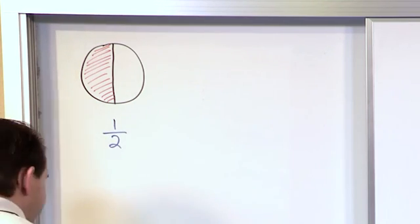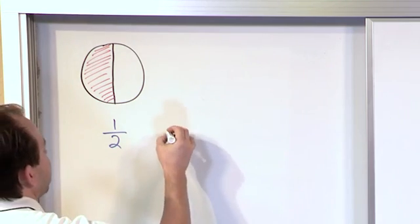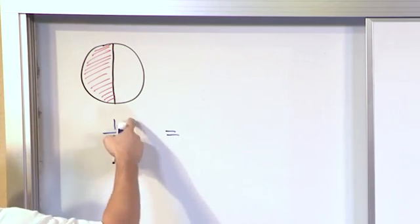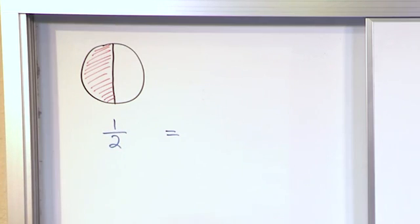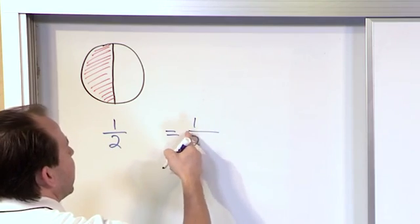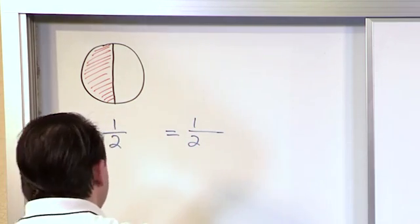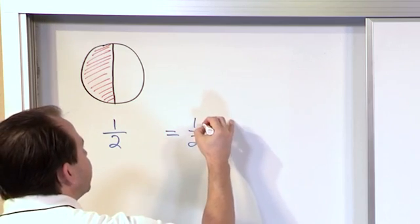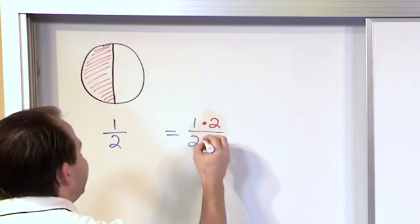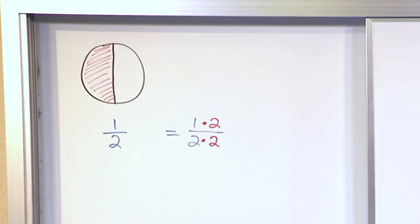All right, so let me show you something. What I can do is I can put an equal sign here, and I can take, I told you, I can take the top and bottom of this fraction, and I can multiply it by anything I want as long as I do it to the top and also to the bottom. So I can rewrite my one half, and I'll just make a longer little fraction bar here, and I can multiply the top of this fraction by the number two. But if I do that, I just have to make sure that I can also multiply the bottom of my fraction also by two.